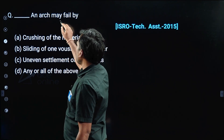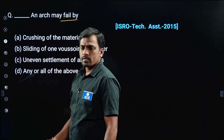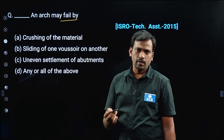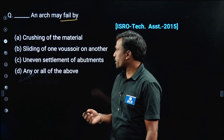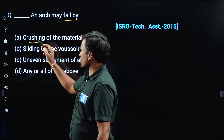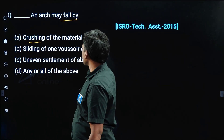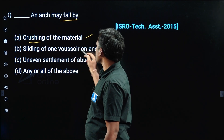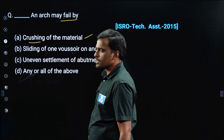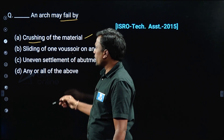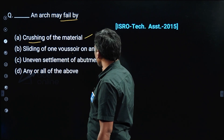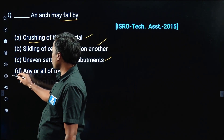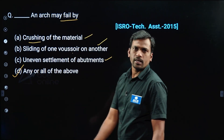An arch fails by — an arch is subjected to compression; it is a compression member. Compression means crushing. Also sliding of one part over another, and uneven settlement of abutments — that is support settlement. So all three are correct, and option D is correct.